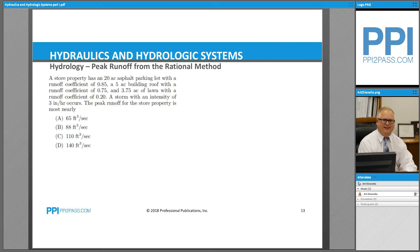A storm with an intensity of 3 inches per hour occurs. The peak runoff from the store property is most nearly... This is a very good example problem for the application of the rational method, Q = CIA.